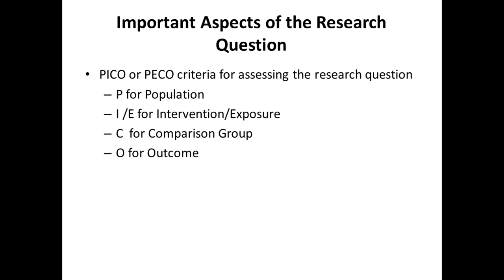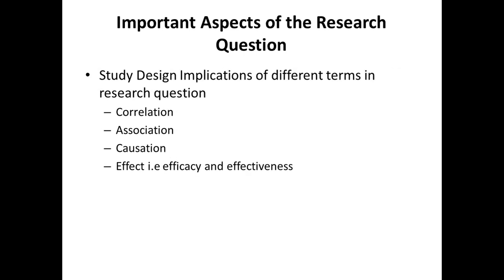There are also study design implications of different terms used in the research question. Terms like correlation, association, causation, efficacy, and effectiveness cannot be used loosely in the stem of a research question — each has its own specific study design implications. We need to understand what each of these terms means and what their study design implications are when used in the research question, and we will cover them in detail in subsequent talks.